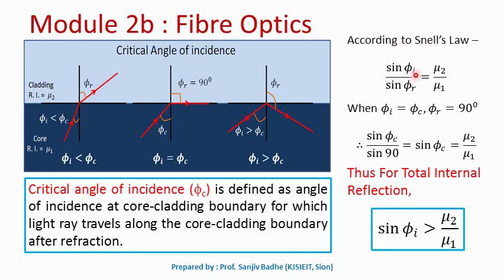According to Snell's law, we can write sin phi i upon sin phi r equal to mu2 upon mu1, where phi i is the angle of incidence and phi r is the angle of refraction. According to the definition of critical angle, when phi i is equal to phi c, then phi r is equal to 90 degrees. Therefore we can write sin phi c upon sin 90 equal to mu2 upon mu1. Since sin 90 is 1, sin phi c equals mu2 upon mu1. So for total internal reflection to occur, sin phi i must be greater than mu2 upon mu1.